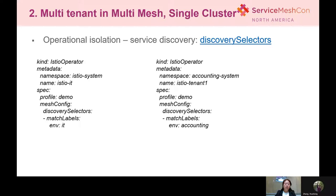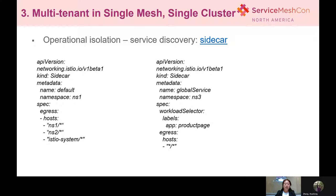So we think further: can we support multi-tenancy in a single cluster with a single mesh? We need to solve the challenges one by one. The first is service discovery isolation. In Istio, it provides a custom resource called Sidecar, which you can use to achieve service discovery isolation. In the example shown, a Sidecar custom resource allows applications running under namespace 1 to access applications in namespace 1, namespace 2, and the Istio system. All other namespaces cannot access it.